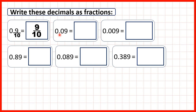Now we have 0.09. This time the 9 is the second digit after the decimal point and all other digits are zeros. Because we have two digits after the decimal point, and the second digit is always the hundredths digit, we draw a line across from the decimal point and write a denominator of 100 — two zeros. So our answer is 9 over 100 because our 9 is in the hundredths place.